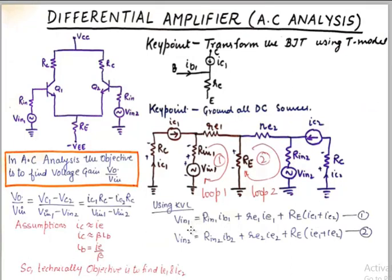So using KVL, Vin1 becomes Rin1 IB1 that's the drop here. Then RE1 IE1 that's the drop here. And capital RE into IE1 plus IE2 because two currents are coming here. So third drop here. And on the other hand in the loop 2, Vin2 will be equivalent to Rin2 into IB2. Then the drop here RE2 IE2. And the drop here which is same as the one written in the above equation. So we have Vin1 and Vin2 with us.